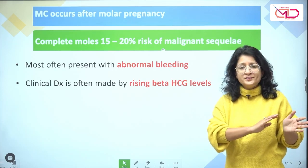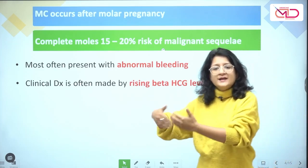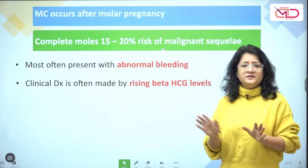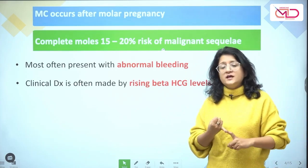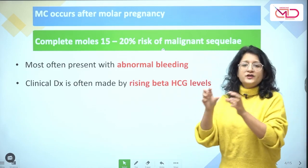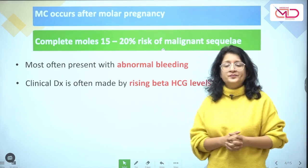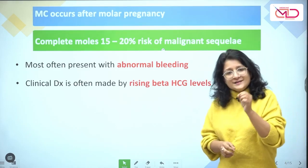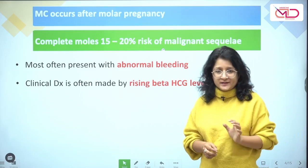Even when there is a history of a prior molar pregnancy and its evacuation somewhere in the past, after any subsequent pregnancy event, whatever the outcome, the retained products of conception or the placenta should always be subjected to histopathological evaluation. If that is not possible, at least a serum beta-HCG should be done after 6 weeks.